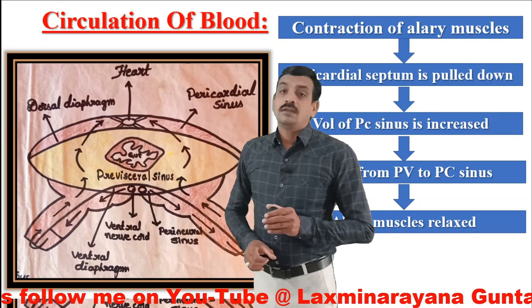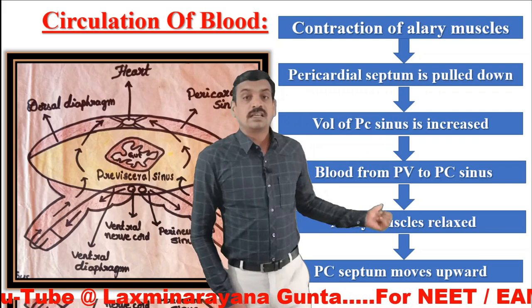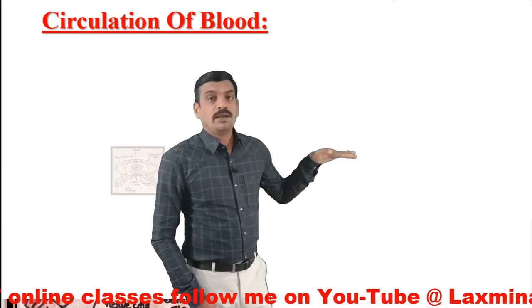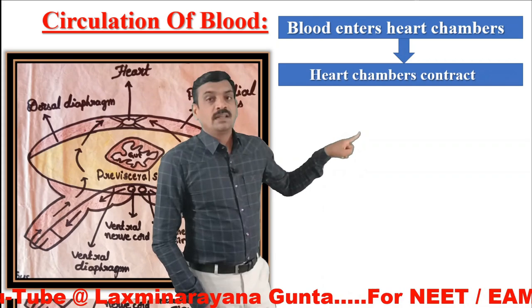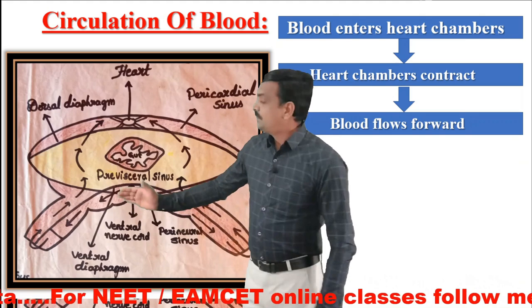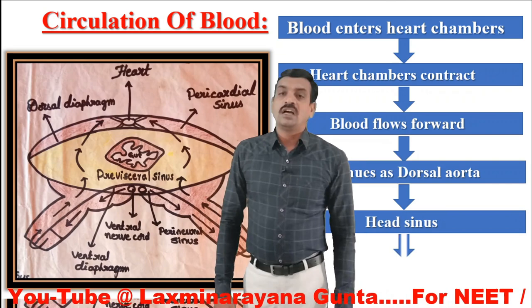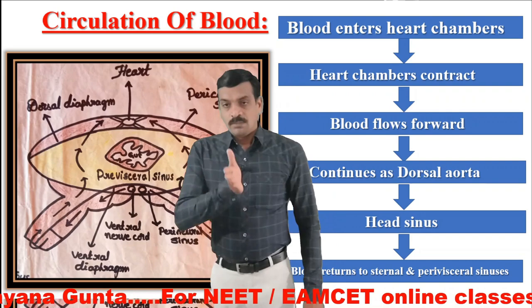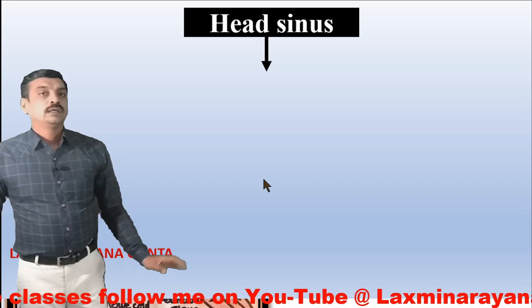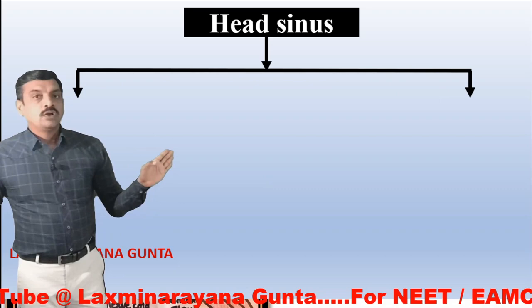As the alary muscles relax, the pericardial septum moves upwards and pressure increases, forcing blood to enter the heart chambers through valvular ostia. When the heart chambers contract, blood flows forward from the 13th chamber to the 12th, 11th, 10th, and so on — continuing as the dorsal aorta and finally reaching the head sinus, then returning to the perivisceral and perineural sinuses.